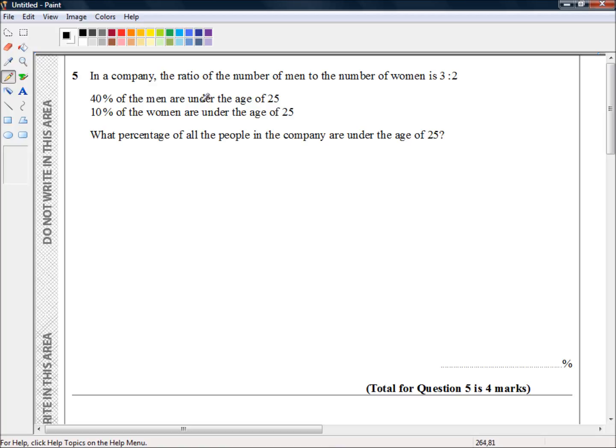For the under-25 males, first we need to know what percentage of the entire workforce are men. The ratio of men to women is 3 to 2, which means three-fifths of the entire workforce are men. That's arrived at by adding 3 to 2 to get the denominator, so 3 out of the total of 3 plus 2 equals 3 out of 5. Three-fifths of the workforce are male.